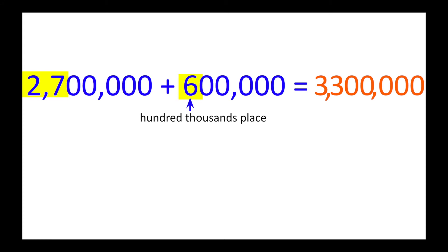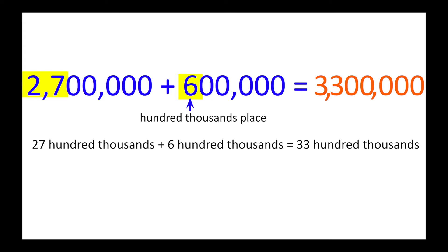Thinking about these numbers in words can also be helpful. In words it would look like this: 27 hundred thousands plus 6 hundred thousands equals 33 hundred thousands. When you're reading each number to the same place value, the label — hundred thousands — stays the same in each addend and in the sum.